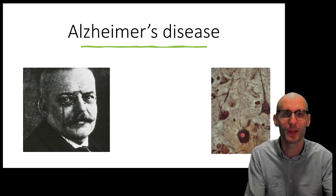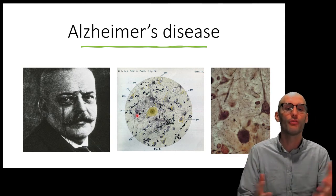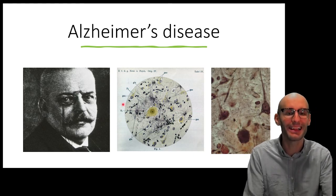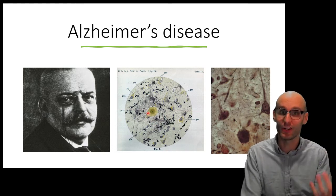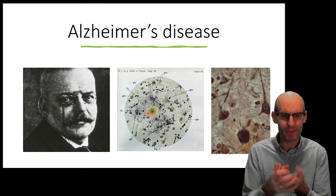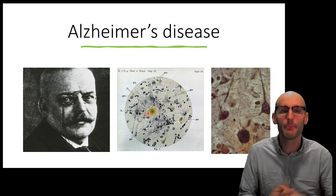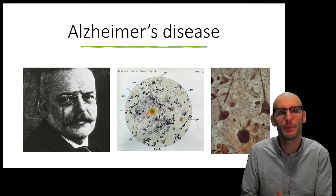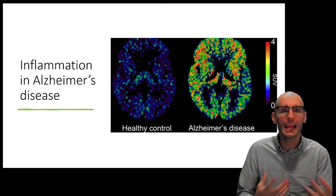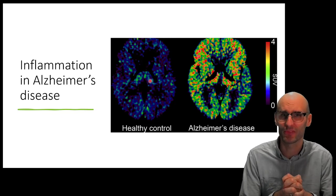Another thing he noticed was clusters of non-neuronal cells around those protein aggregates. What we later learned — and it took nearly 100 years to really jump onto this — was that it was inflammation going on around those protein aggregates. There was massive inflammation in the brain. We can actually view that live in a living patient using a special kind of medical imaging called PET imaging. This quantifies the activation of the resident immune cells in the brain.